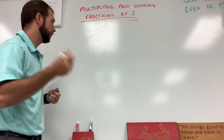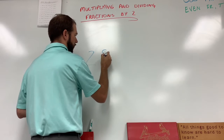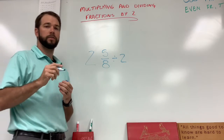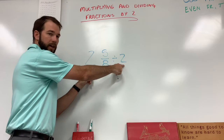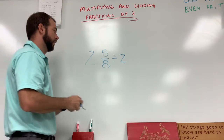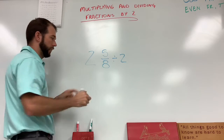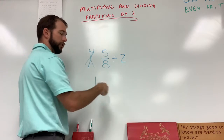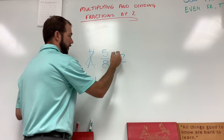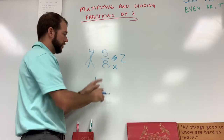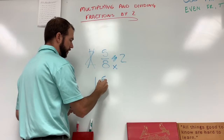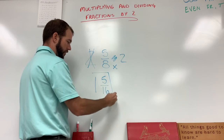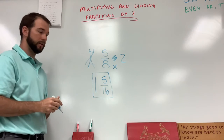Now let's try one with a mixed number: two and five eighths divided by two. Again, we have two math problems — the whole number divided by two and the fraction divided by two. Two divided by two is one, so our whole number is now one. For the second math problem, just like the last example, we cross out the division sign and switch it to multiplication for the bottom only. The top stays the same as a five; eight times two is sixteen. Sixteen is our new bottom number, which is even, and our five is odd — so we are finished.